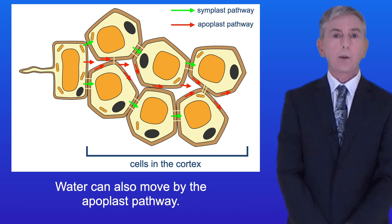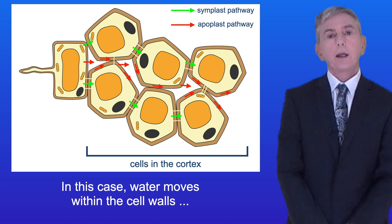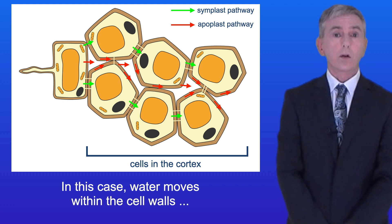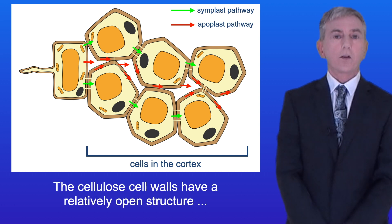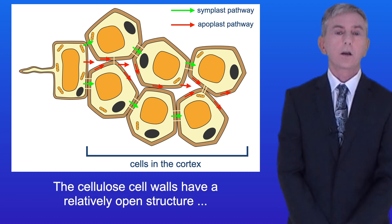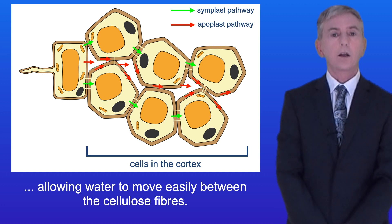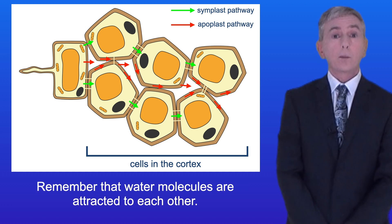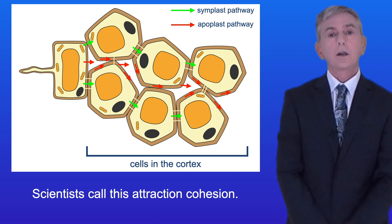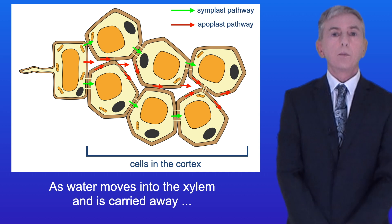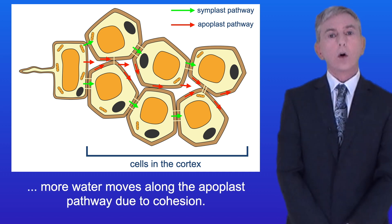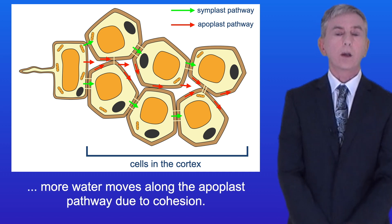Water can also move by the Apoplast pathway. In this case, water moves within the cell walls and the spaces between the cells. The cellulose cell walls have a relatively open structure, allowing water to move easily between the cellulose fibers. Water molecules are attracted to each other — scientists call this attraction cohesion — due to the fact that water molecules can form hydrogen bonds to each other. As water moves into the xylem and is carried away, more water moves along the Apoplast pathway due to cohesion.